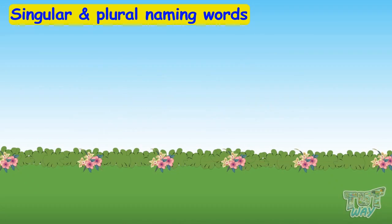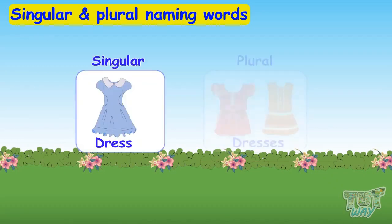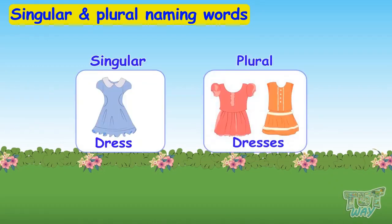But in some words, we will add ES to make it plural. Let's see them. Dress, dresses — dress is a singular naming word, and in order to make it plural, we added ES to it.